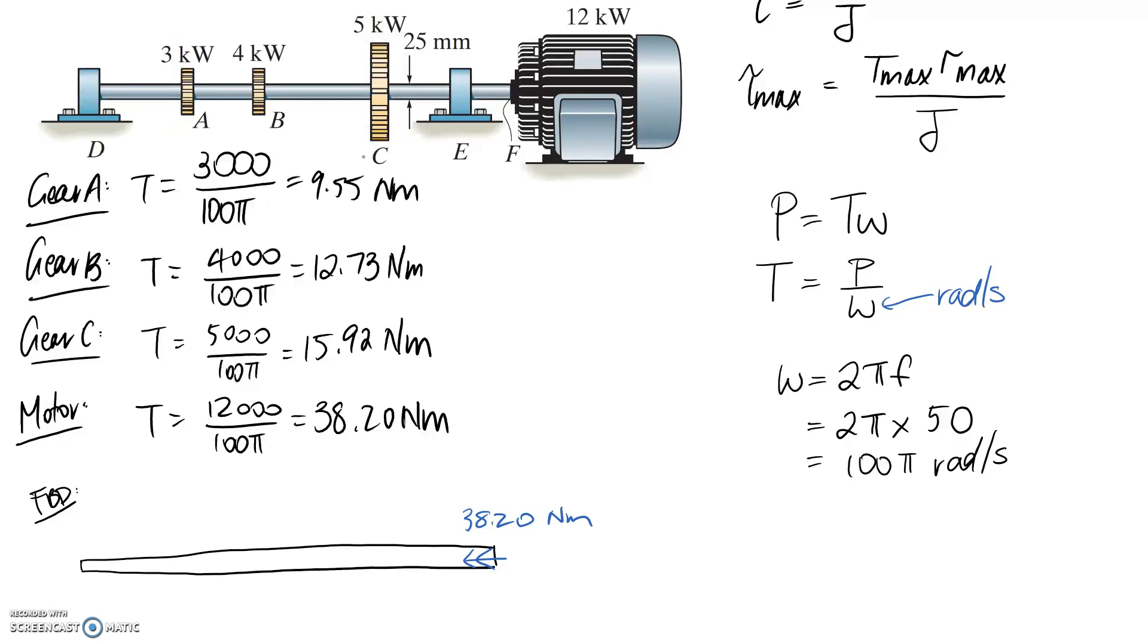The torque at point F is 38.20 newton meters. At gear C, it's 15.92 newton meters in the opposite direction since it's being used. Next at B we have 12.73, same direction as the other gears because it's being used. And we have one left at A, which is 9.55 newton meters, again same direction.